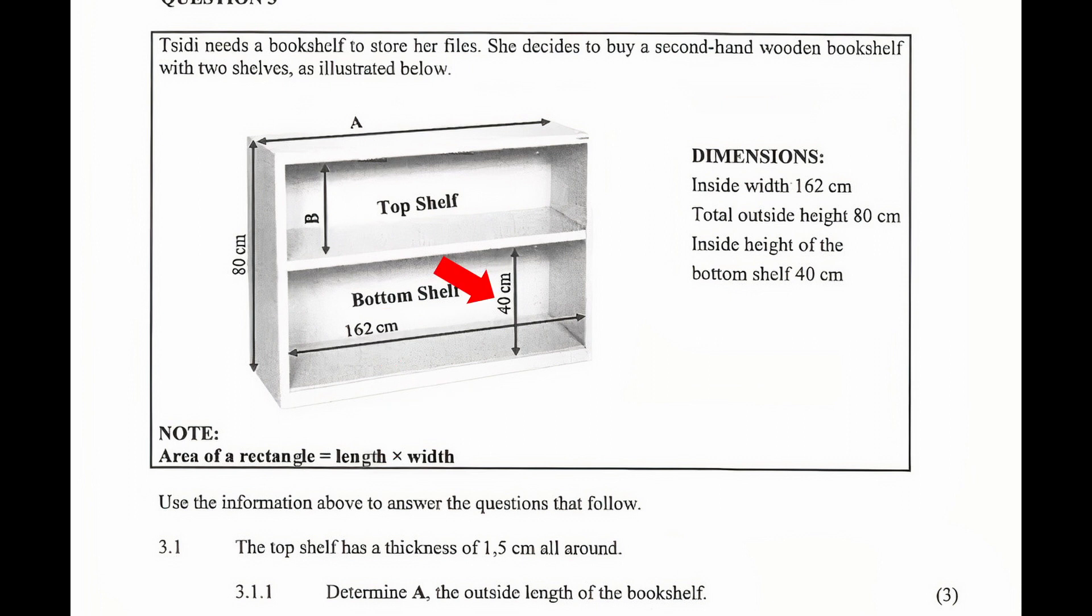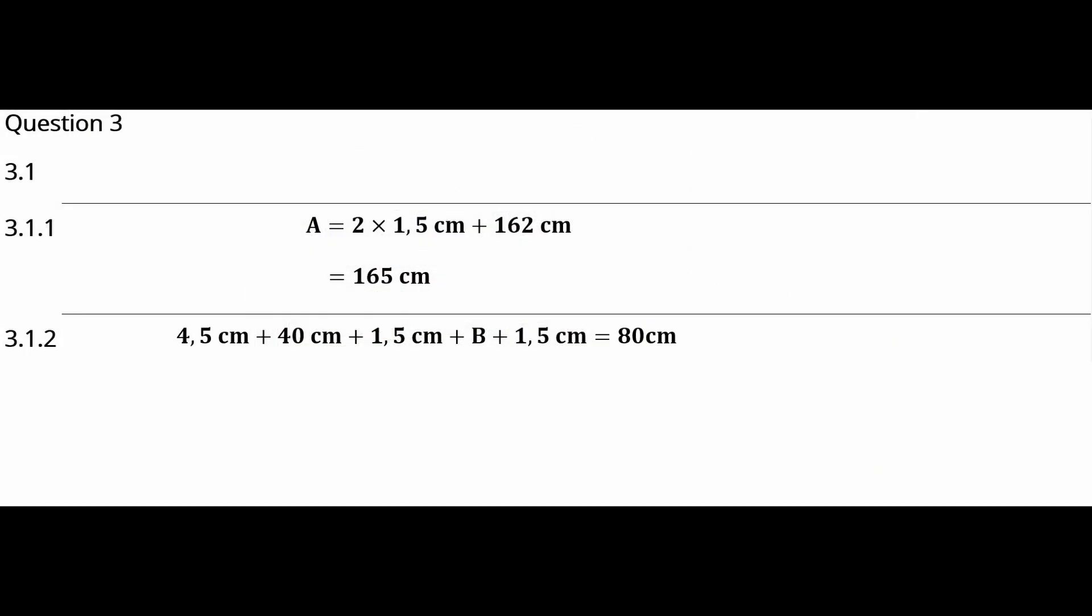The inside height of the bottom shelf is 40 cm. The thickness of the base of the top shelf is 1.5 cm, and the thickness of the top of the top shelf is also 1.5 cm. So the equation for the outside height of the bookshelf is 4.5 cm plus 40 cm plus 1.5 cm plus B plus 1.5 cm equal to 80 cm. Simplifying this equation gives us B plus 47.5 cm equals 80 cm. When we subtract 47.5 cm from both sides of this equation, we get B equal to 32.5 cm.